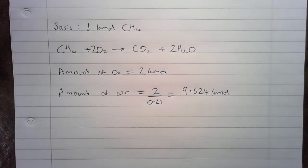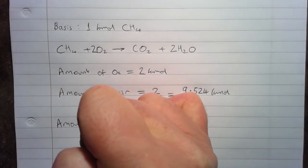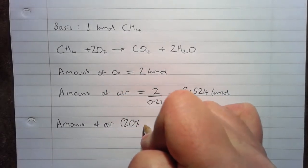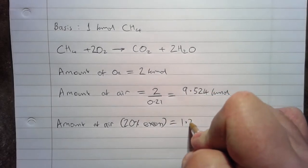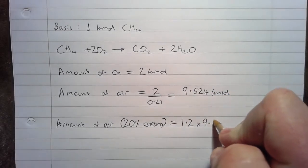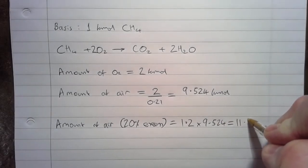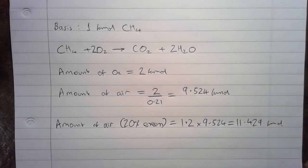Now, in order to work out how much air would be needed for 20% excess air, we can times that by 1.2. So amount of air, 20% excess equals 1.2 times 9.524, and that equals 11.429 kmoles.